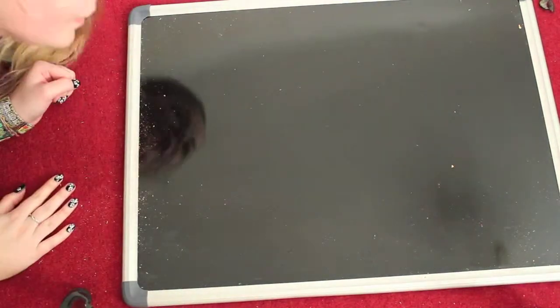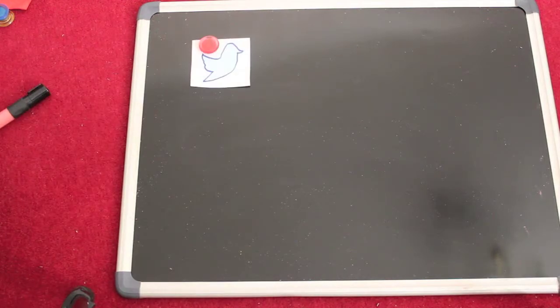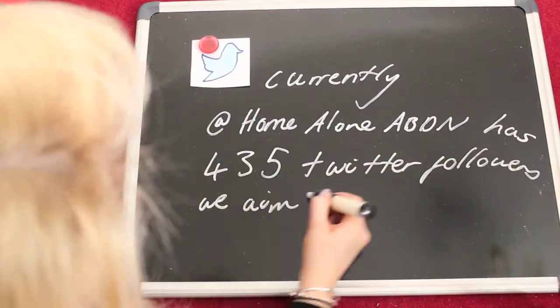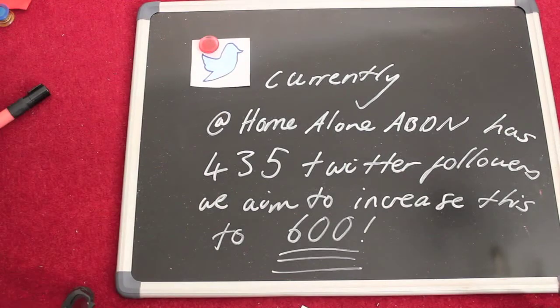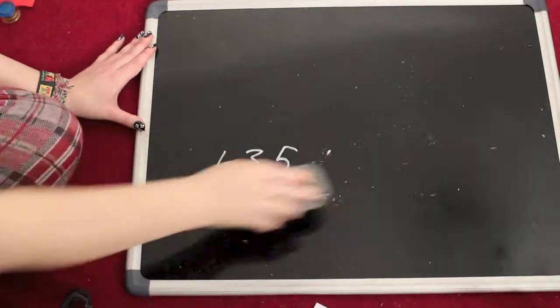As social media followings are easily measurable, we decided to set ourselves a couple of aims or goals. Currently the Home Alone Aberdeen group use Facebook and Twitter as well as a website. In terms of Twitter followers, Home Alone Aberdeen stand at a number of 435, a number which we will increase to 600 before the final night.